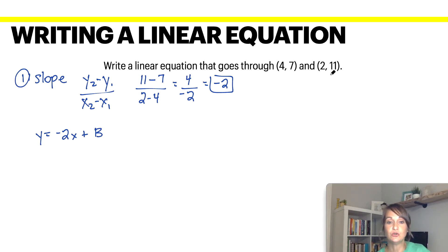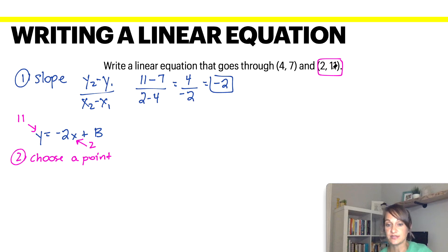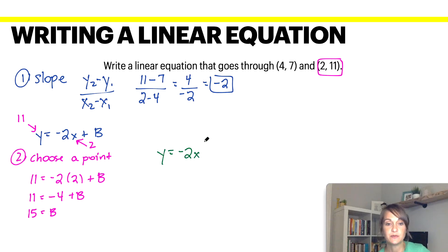From this, you are going to choose a point — so the second step is to choose a point. You are going to plug that point into x and y. I'm going to use (2, 11): plug 2 in for x and 11 in for y. So 11 equals negative 2 times 2 plus b. Multiply to get negative 4, then add 4 to both sides to solve for b, which gives me 15. So my final answer is y equals negative 2x plus 15.